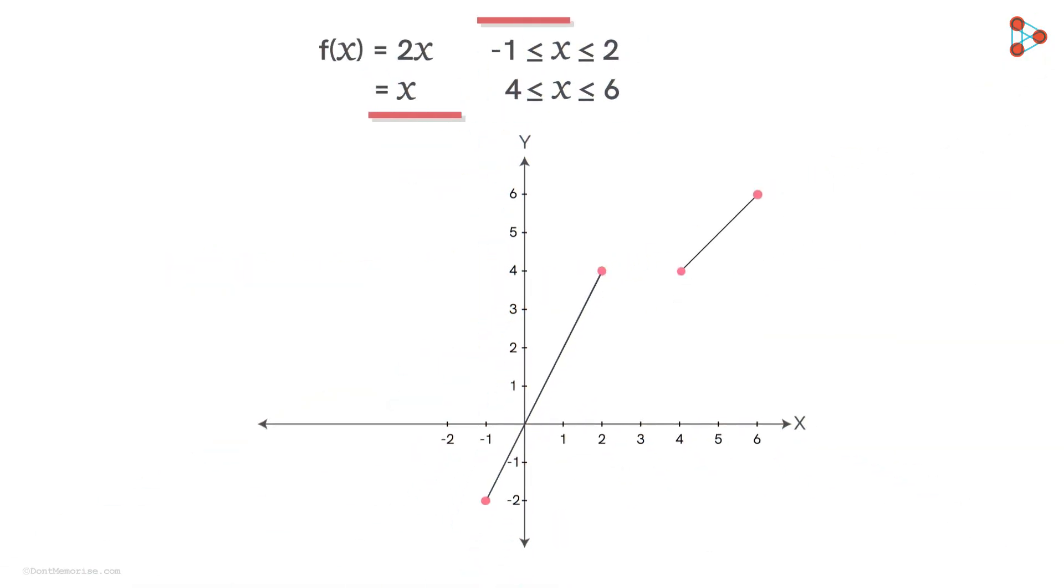Have a look at this function. The graph is as shown. There appears to be a big gap in the graph between the numbers 2 and 4 on the x-axis. In fact, there is no plot between these two points, as the function is not defined for the numbers between 2 and 4.